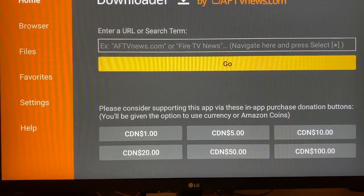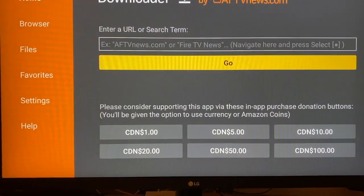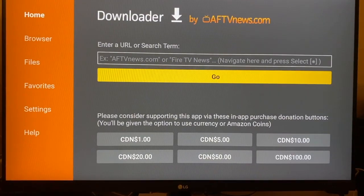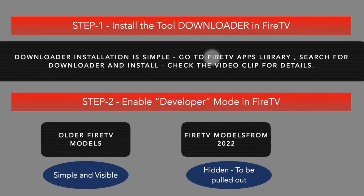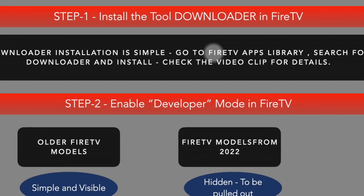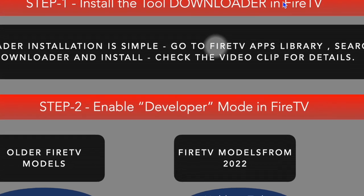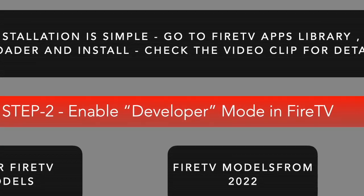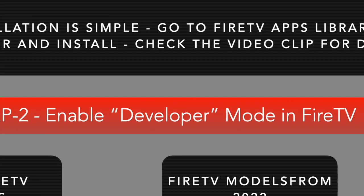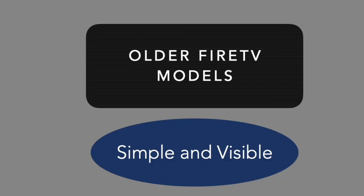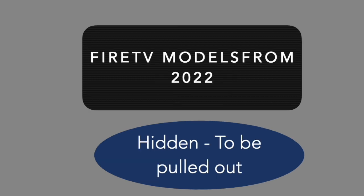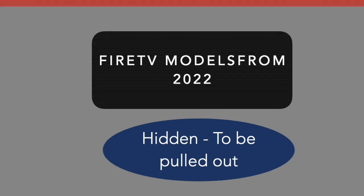Now we need to enable developer mode in Fire TV. Access to developer mode in old and new models is different. In older models, developer mode is available in Fire TV Settings under My Fire TV. In new models, developer mode is hidden, and the way to access it is explained in the following slides.